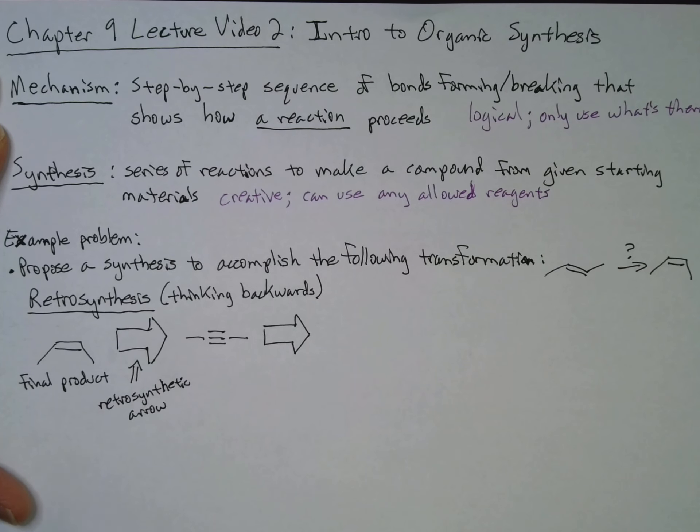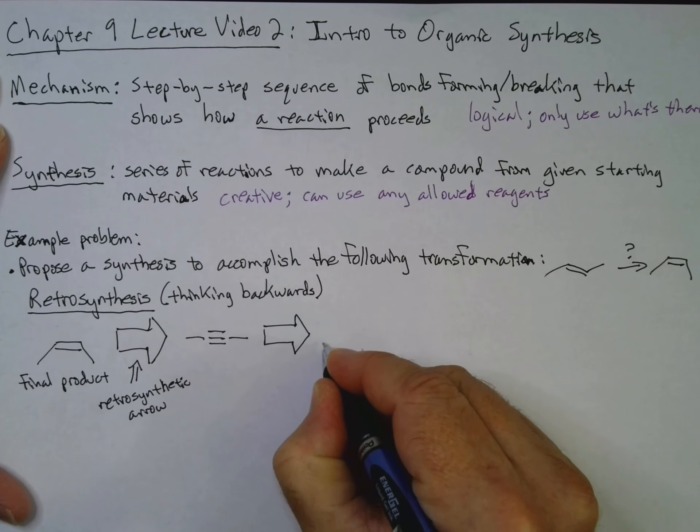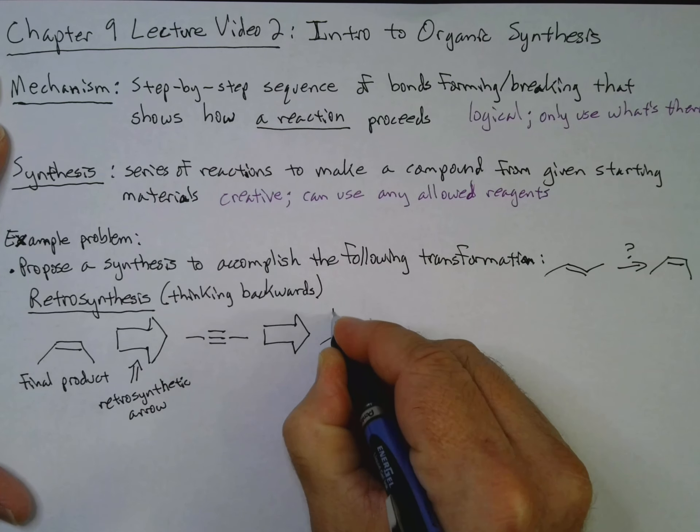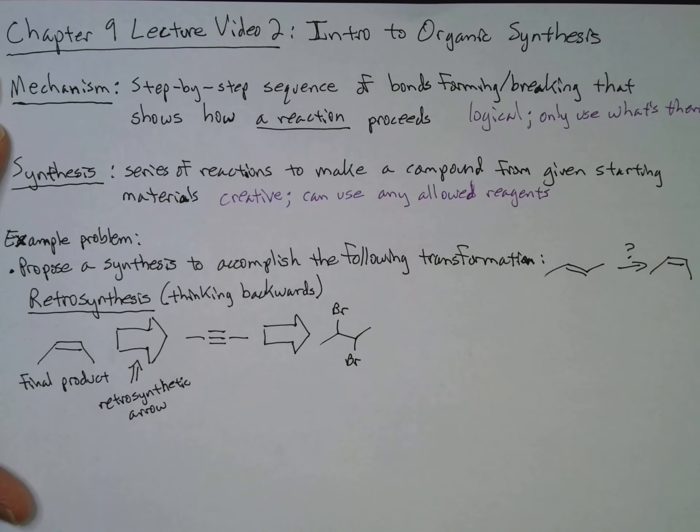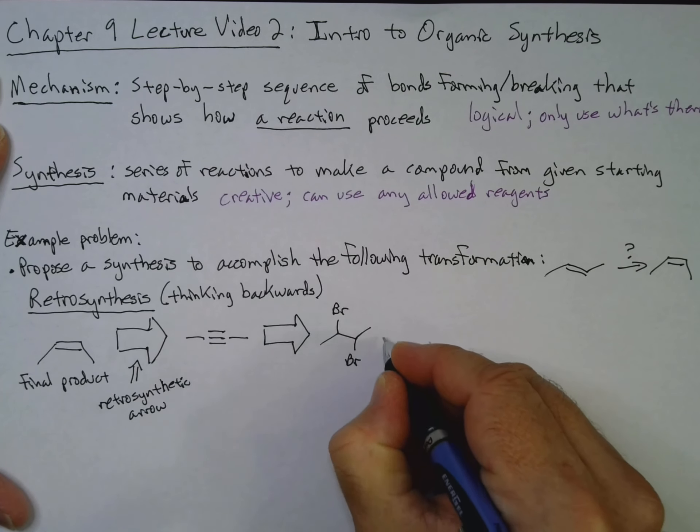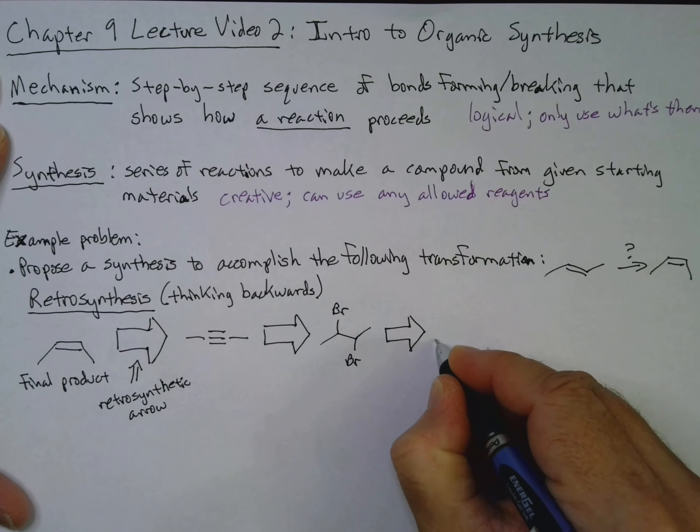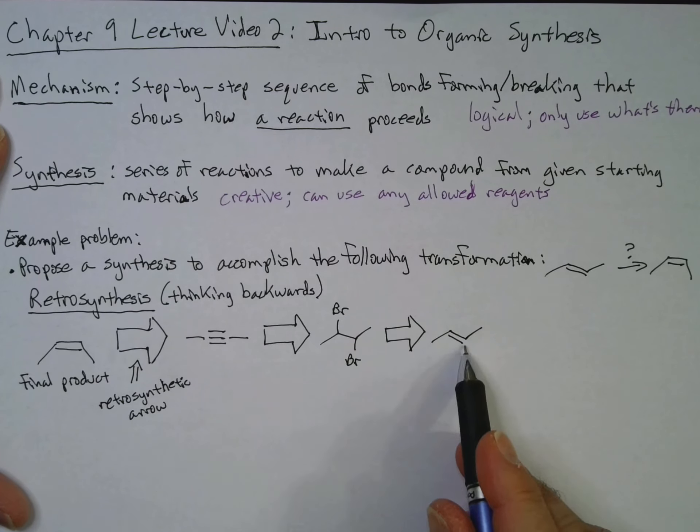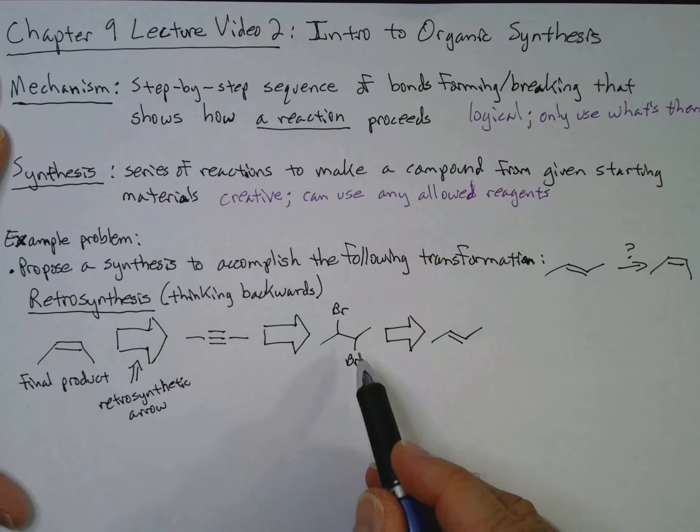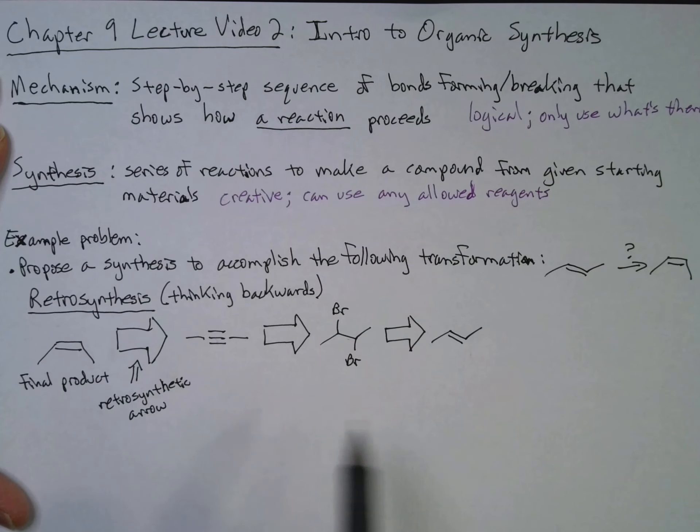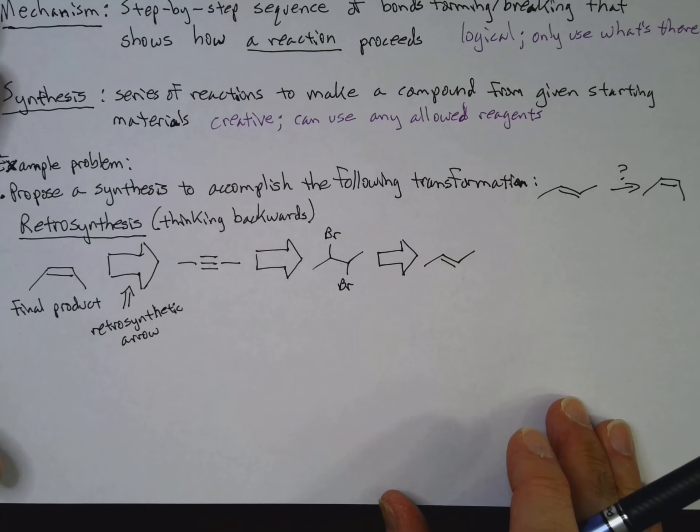Now, how do we make an alkyne? All right. Now that you're back, hopefully, what you saw was that you had a dihalide. Remember, that's the one way we've shown to make an alkyne. So we've got our dihalide. How do you make a dihalide? Well, I can add Br2 to an alkene. And this dihalide, it doesn't matter the stereochemistry, if it's RR, SS, or if it's the meso compound, it doesn't matter, it's still going to give you this particular alkyne.